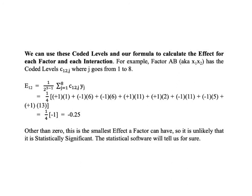We can use these coded levels in our formula to calculate the effect for each factor in each interaction. For example, factor AB, also known as x sub 1, x sub 2, has the coded level c sub 1 to j, where j goes from 1 to 8. Here is the formula for the effect of that factor. The result is negative 0.25. Other than 0, this is the smallest effect a factor can have, so it is unlikely that it is statistically significant. The statistical software will tell us for sure.